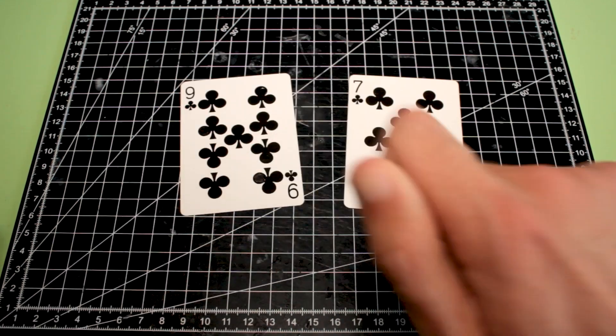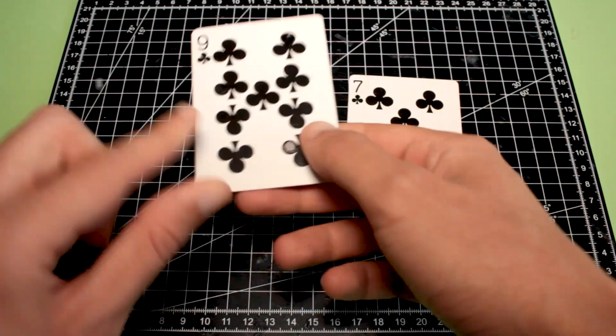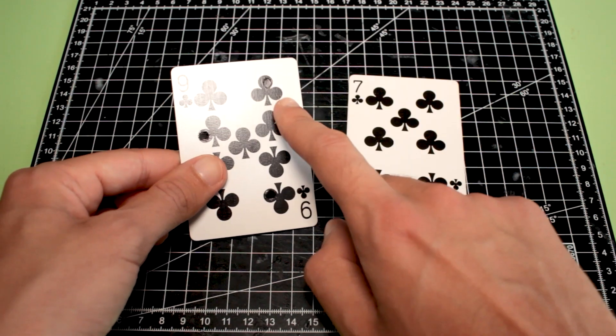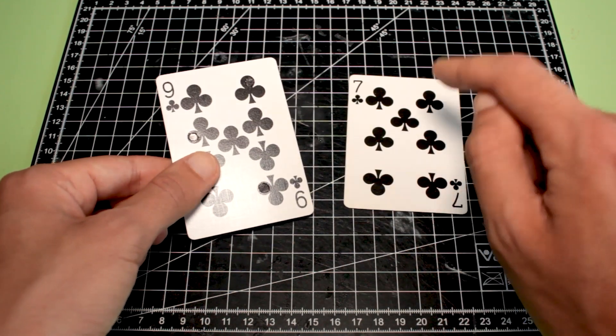Now this is a gimmick already finished in which I've used a 9 of clubs and on this gimmick I've made three holes in these three points. Now we'll see how it works.